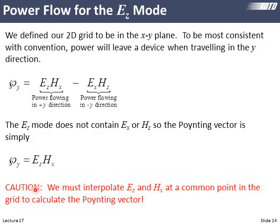One thing to be cautious about: Ez and Hx exist at physically different points within the y-cell. We have to interpolate those to a common point before their product makes sense, otherwise we'll get slight errors. We interpolate them to a common point, multiply, and then we know the y-component of the Poynting vector within that cell.